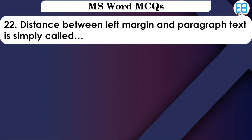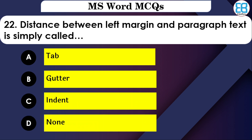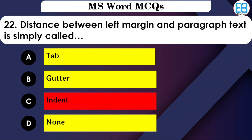The distance between the left margin and paragraph text is called what? The options are: Gutter, Indent, or Non. The correct option is Indent — the distance from the left margin to the beginning of the paragraph text is called Indent.